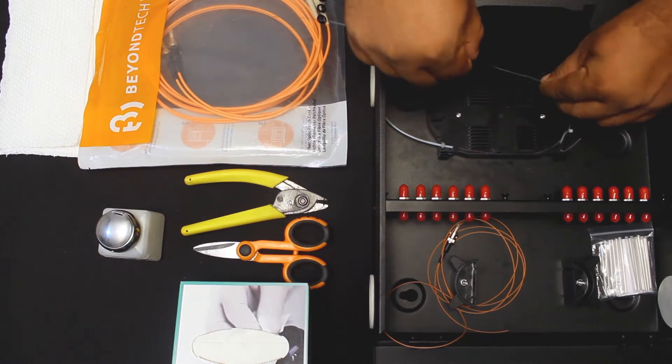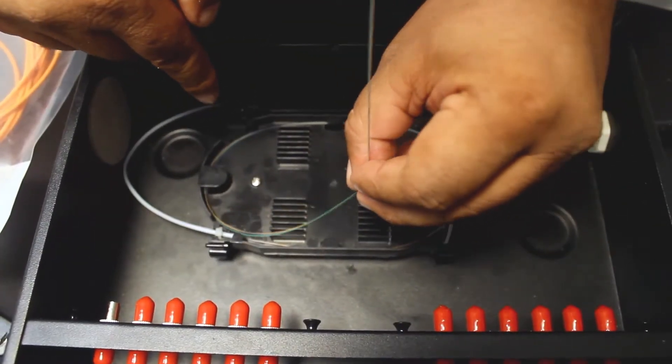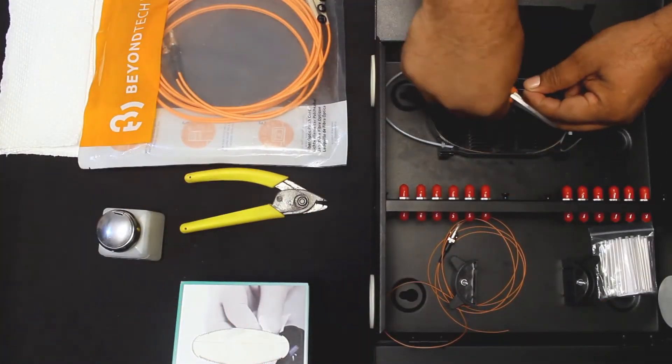Trace the fiber around the tray. You may need to do one or two loops depending on how much fiber you've prepared. Cut the excess if necessary.